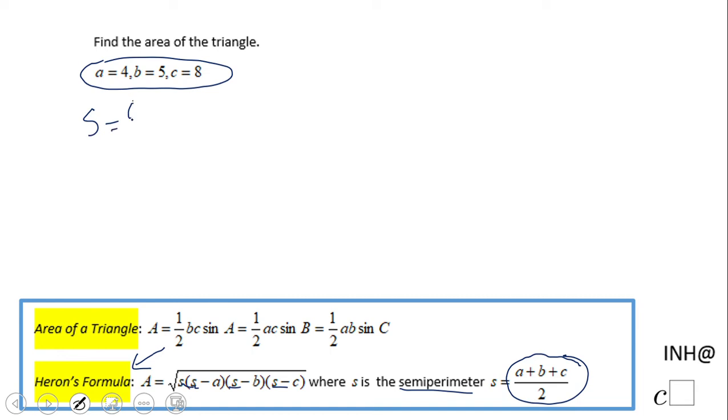I'm going to add A, B, and C and divide by two. So in this case we have 4 plus 5 plus 8 divided by 2. That will be 17 divided by 2, or 9.5.